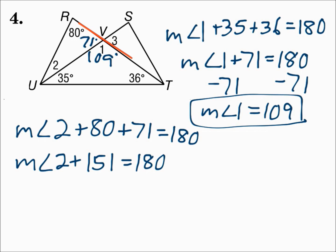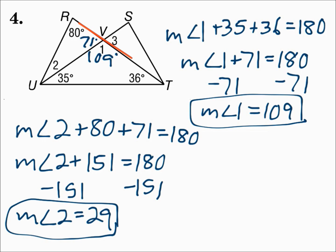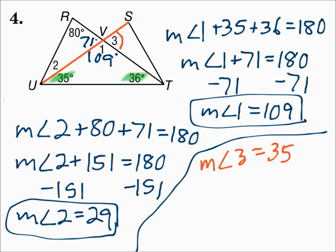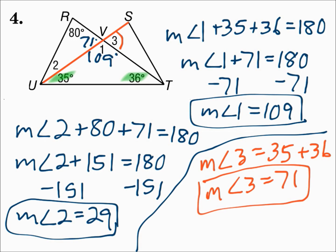For angle three, we can use the exterior angle theorem. If you extend the side of the bottom triangle, angle three is an exterior angle, and 35 and 36 are the remote interior angles. So the measure of angle three = 35 + 36 = 71 degrees.